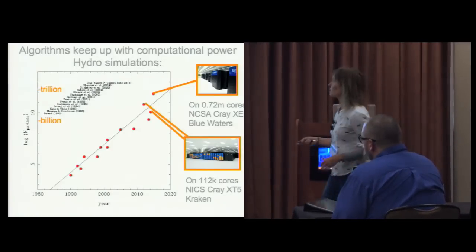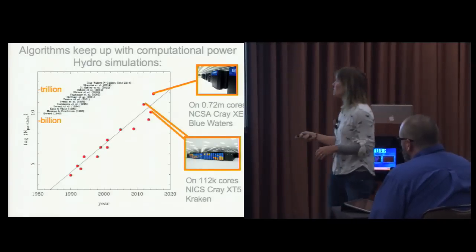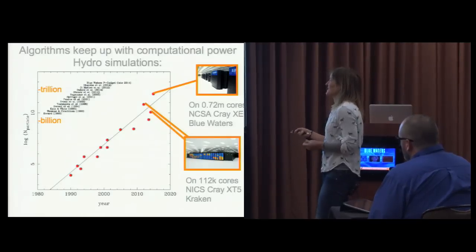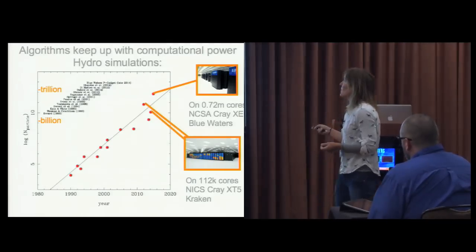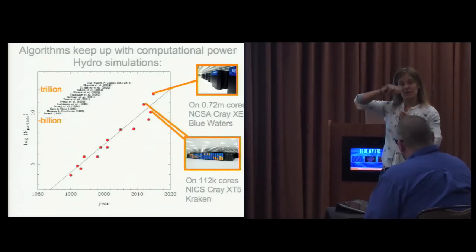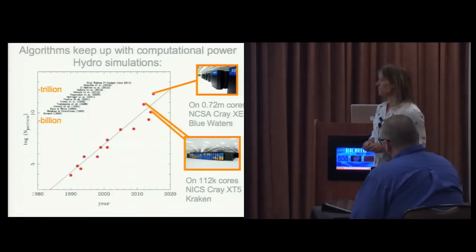If you translate this into how big the runs are getting, this is the number of particles per year from the beginning. We're approaching the trillion particles for the kind of resolutions that we need in order to get the full mass functions of the structures that we want to look at.